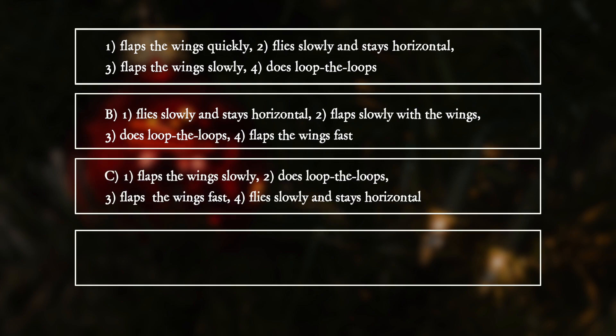C: 1 flaps the wings slowly, 2 does loop-the-loops, 3 flaps the wings fast, 4 flies slowly and stays horizontal.